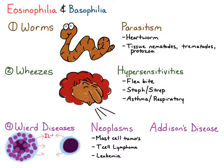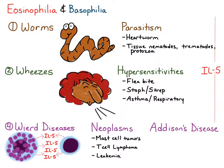Most of these causes of eosinophilia and basophilia produce an eosinophilia and basophilia because there is production and release of interleukin IL-5 by mast cells or T lymphocytes in a T helper 2 response. This IL-5 goes back to the bone marrow and tells the bone marrow to undergo eosinophilic hyperplasia to get those eosinophils where they're being called to in the tissues.